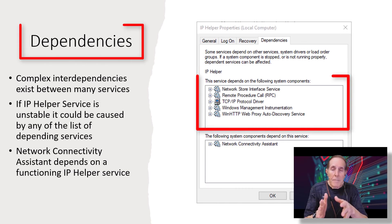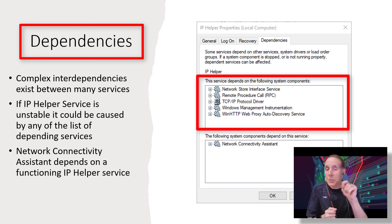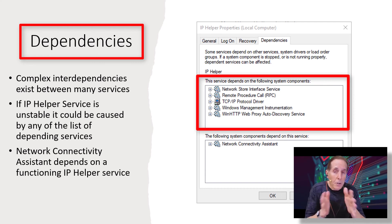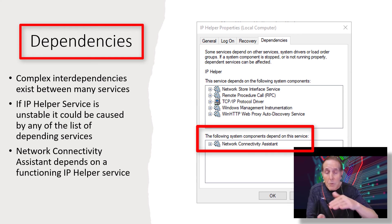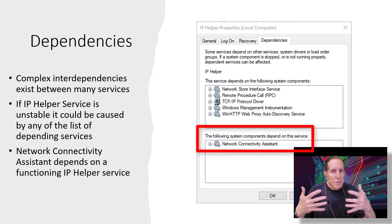Let's take a look at the graphic on the right. We're looking at IP Helper Service, and I've chosen the Dependency tab. You can begin to see where it says this service depends on the following system components, and it has a list: Network Store, Interface Service, RPC, TCP/IP Protocol Driver, and on and on. You can see these lists of services that IP Helper depends on functioning properly before it can function properly. And then below that it says the following system components depend on IP Helper, and it lists Network Connectivity Assistant.